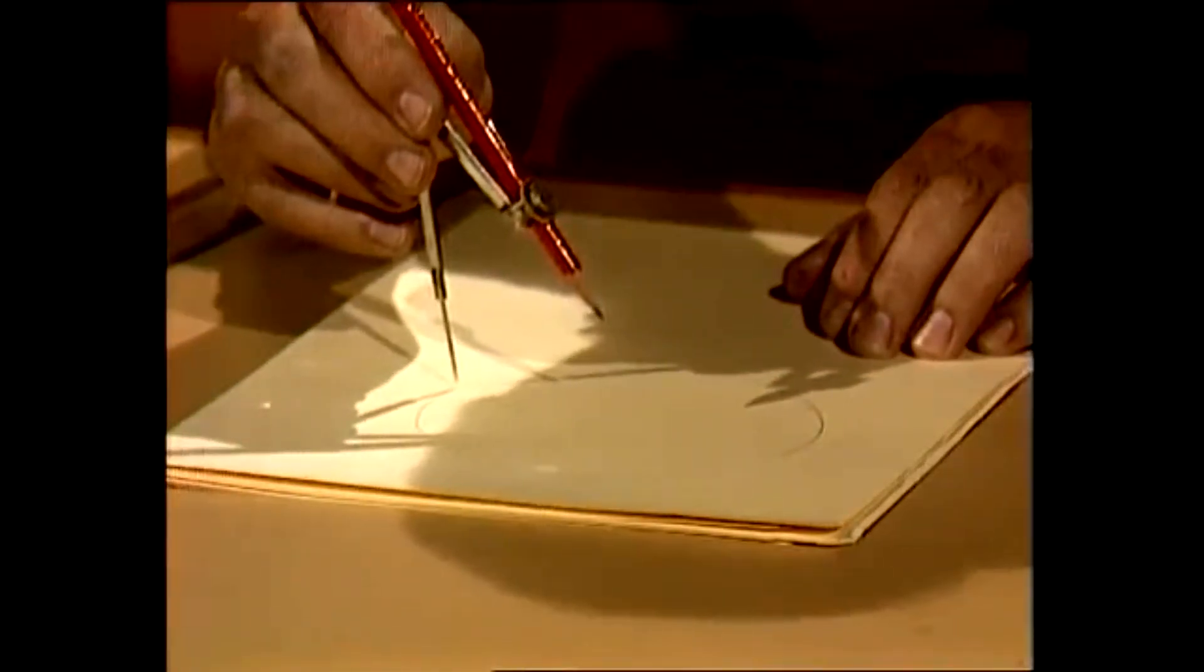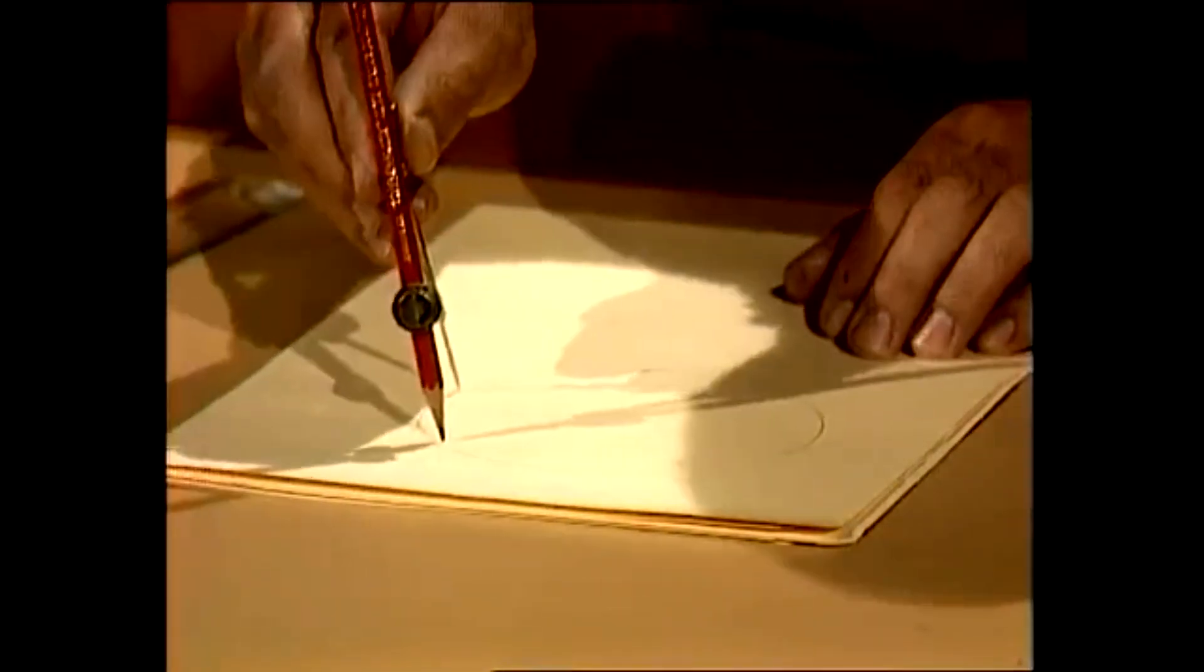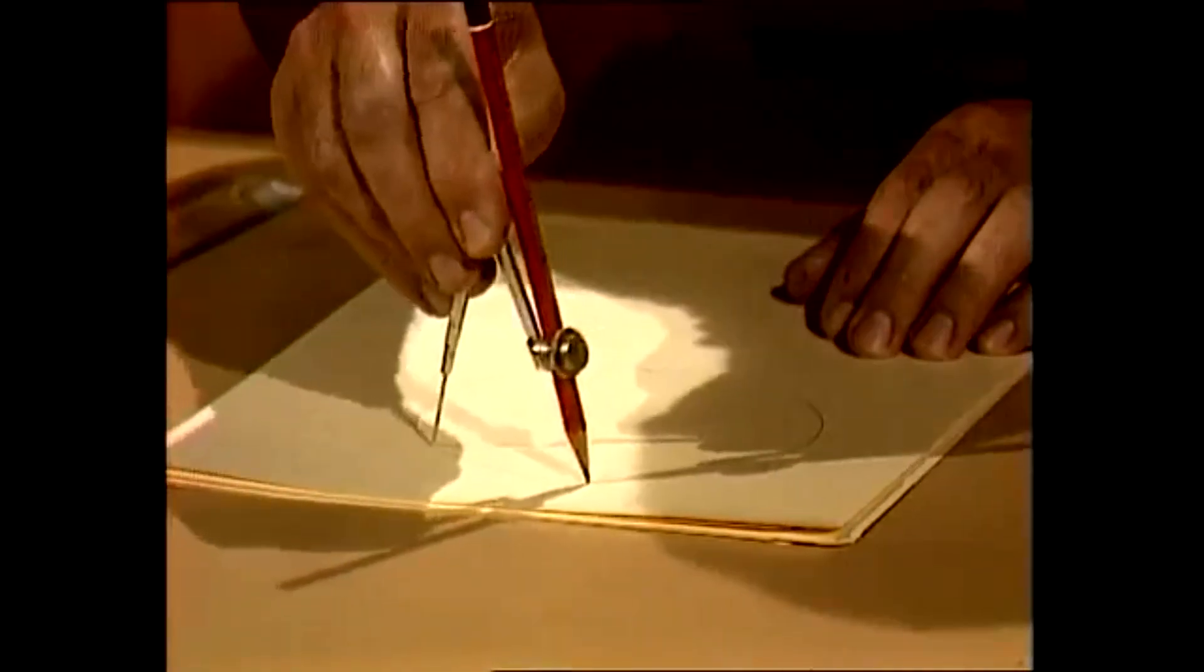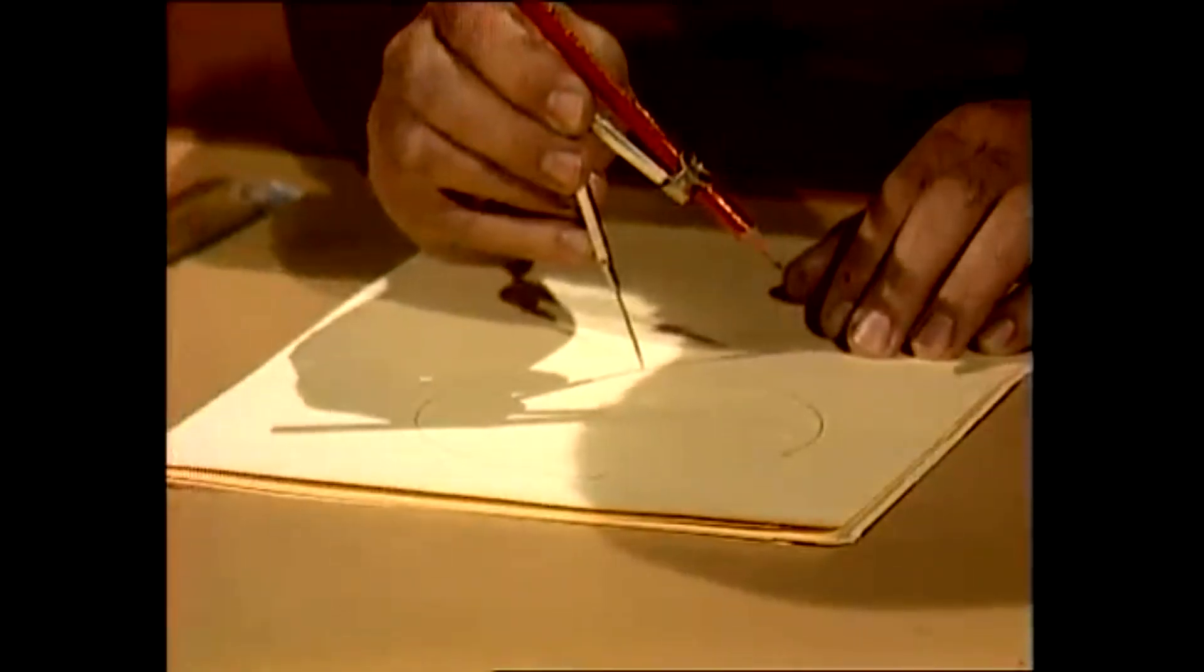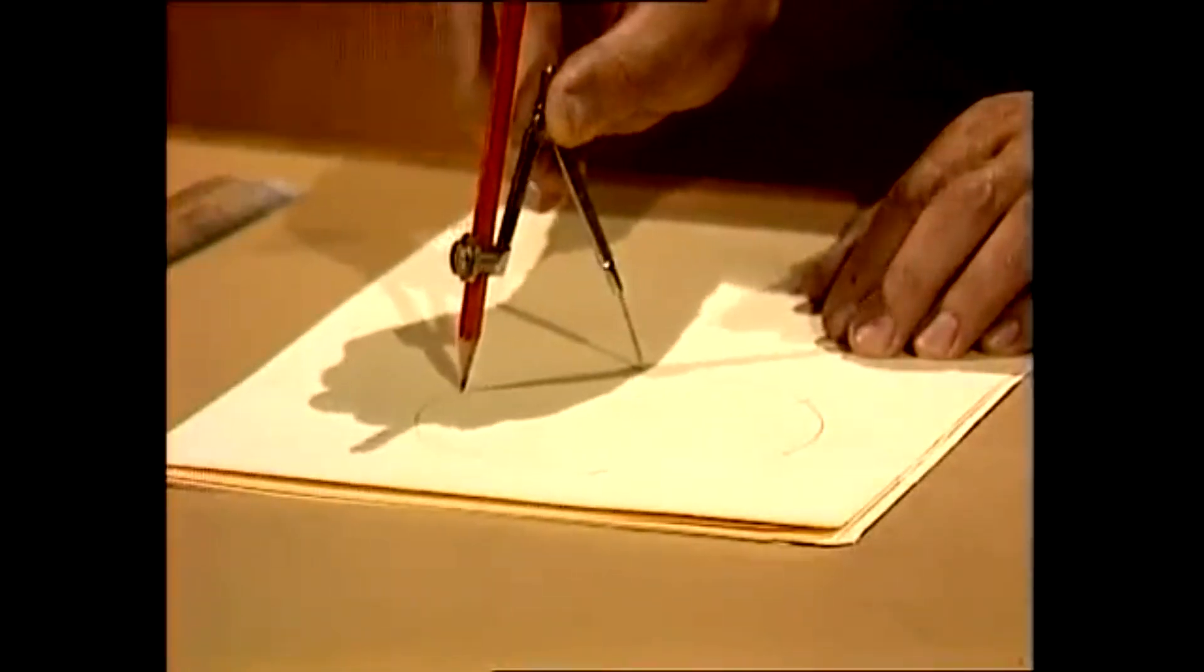Then having done the circle, keep your compasses at the same distance, put the point on the circle and with the pencil keep cutting it and moving the point onto each successive mark. You'll end up with six marks on the circle and by checking you can establish that they're all the same distance apart. If they are you're accurate so far.